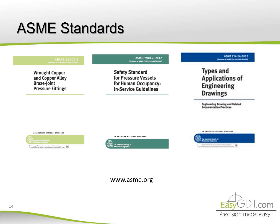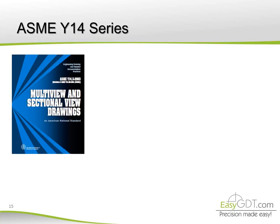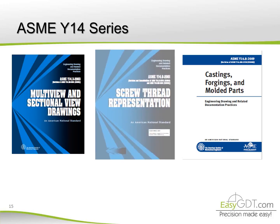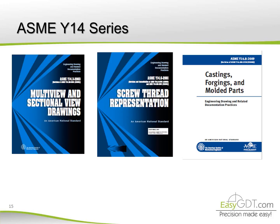All ASME standards are available to the general public through their website, www.asme.org. In the G14 series, we can find all the engineering drawing standards — for machine parts, metal, casting, etc. Here you can see ASME 14.3 related to multi-view and sectional view drawings, 14.6 for screw thread representation, and 14.8 for casting, forging and molded part drawings.